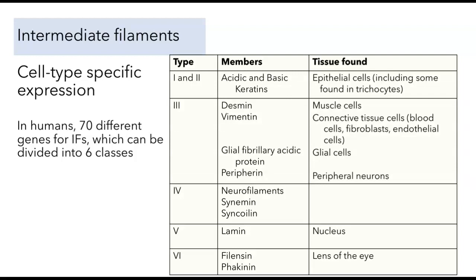There are a number of different actin genes, some expressed only in muscle cells, and a number of different tubulin genes — alpha tubulin, beta tubulin, and gamma tubulin — sometimes with more than one variety, such as a form of beta tubulin expressed only in nerve cells. But even if we add up all the different types of actin and all the different types of tubulin, it will be small compared to the diversity of intermediate filaments.